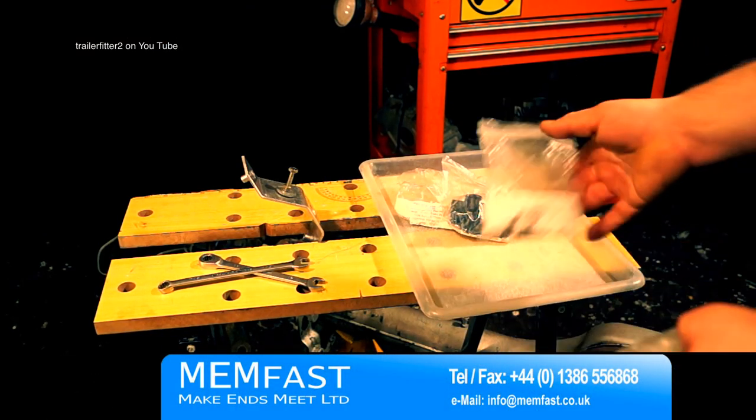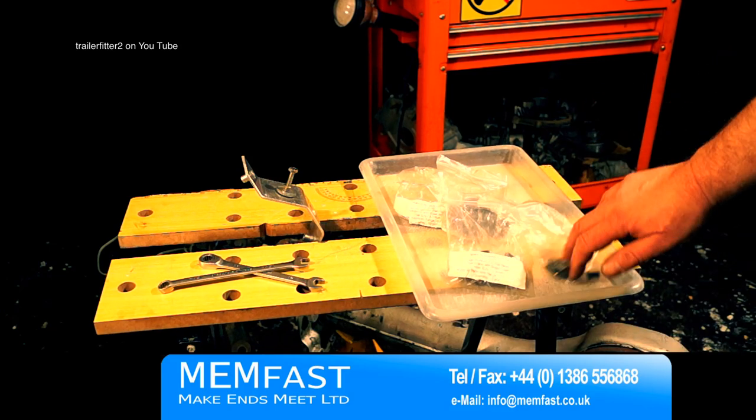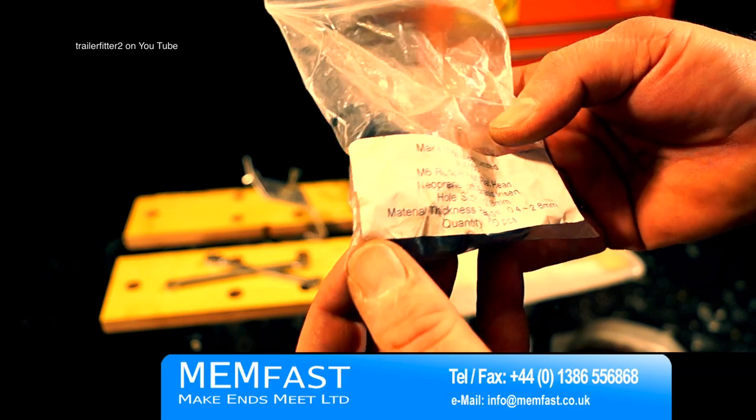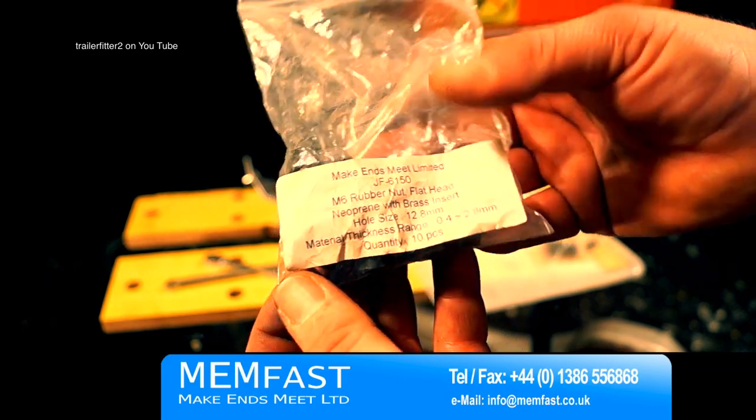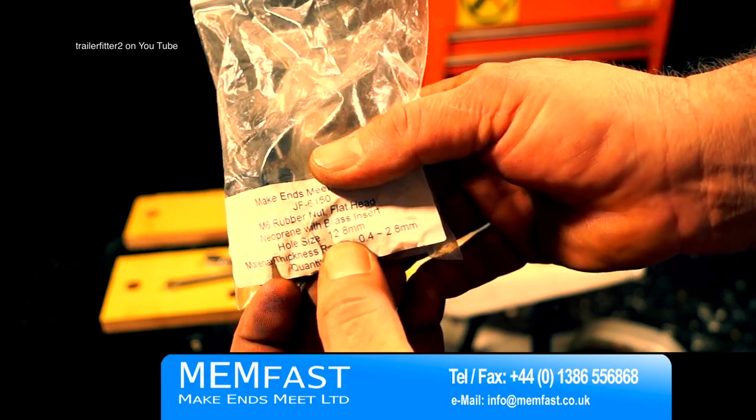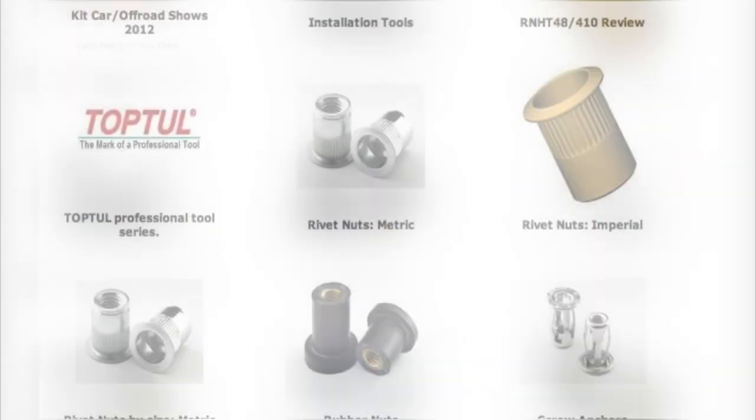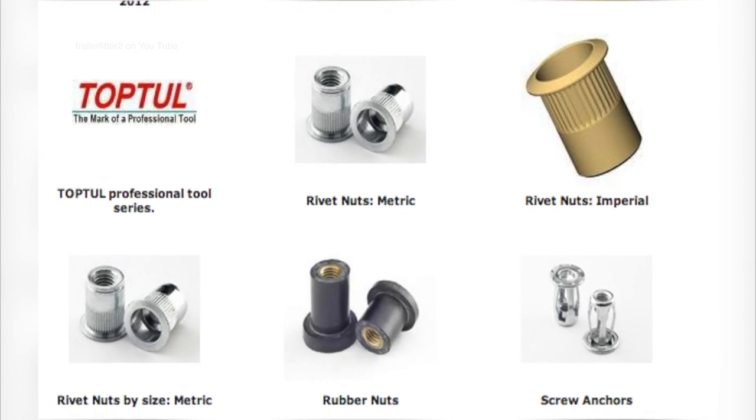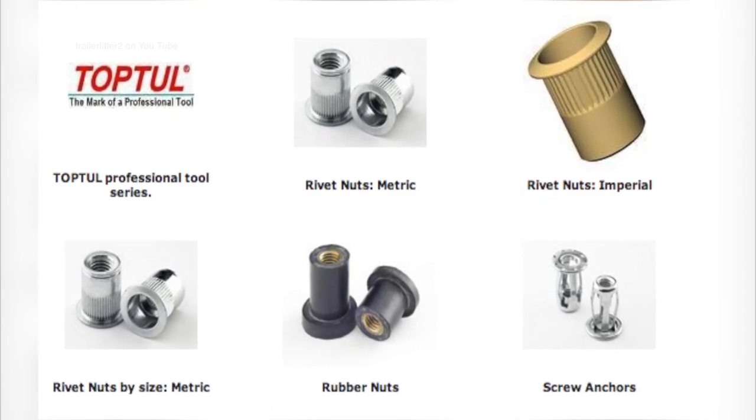Which are available from Memfast again. With this the details are on the packet. You need to know the thickness of your material. And with this is a 12.8 or half inch drill size. So have a look on their website and you'll find them all there. Links are at the bottom of this video in the description page.